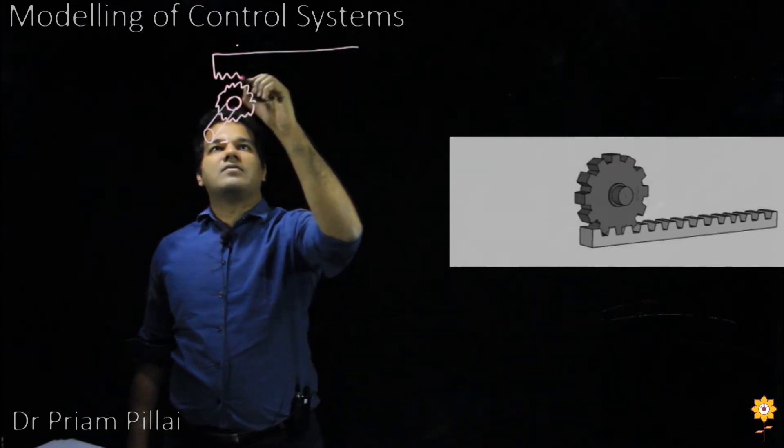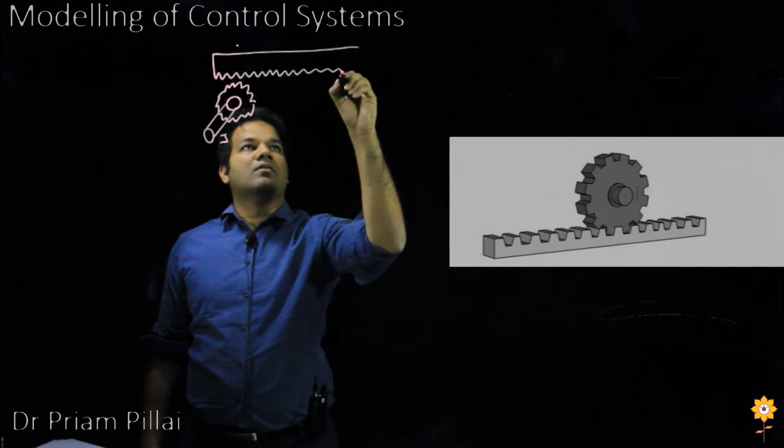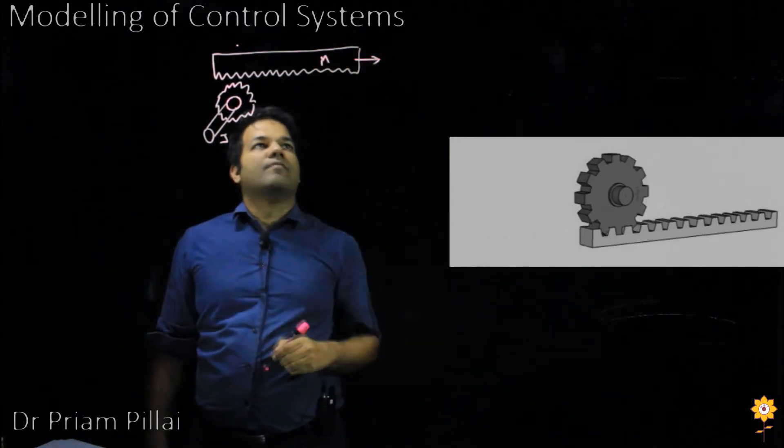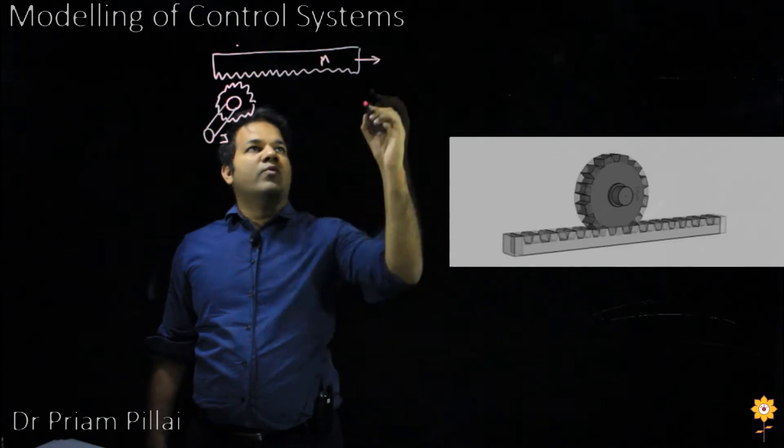And a rack that's sliding on top of it, having a mass M and moving with the velocity V.